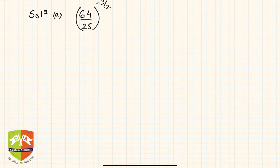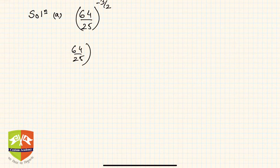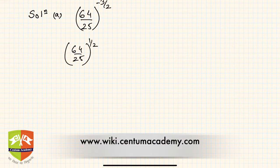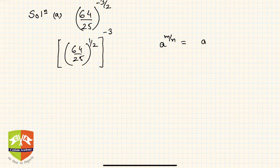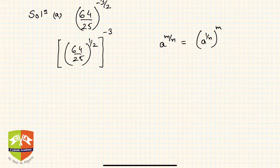This can be written as (64/25) to the power half, whole to the power minus 3. The law I applied is: a to the power m by n is nothing but a to the power 1 by n, whole to the power m. These are the laws of rational exponents.